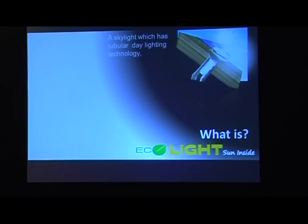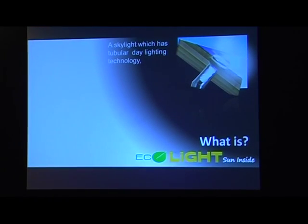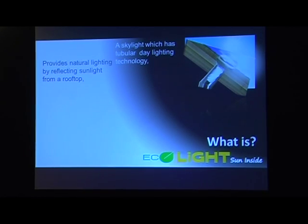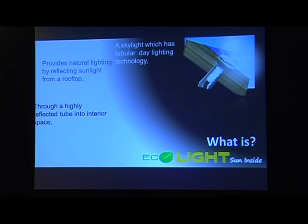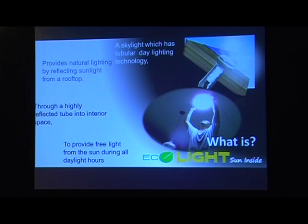Ecolight is a skylight with tubular daylighting technology. It is similar to a skylight but is a revolution from skylight into a tubular system. It provides natural lighting by reflecting sunlight from a rooftop through a highly reflective tube into interior space, giving free light from the sun during all daylight hours. It lights up the dark room.